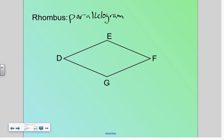Do we know anything about the angle? What was a rectangle? It had all 90-degree angles. Is that true of a rhombus? No. We know that opposite angles are equal about all parallelograms. Four congruent sides. A rhombus is a parallelogram with four congruent sides.